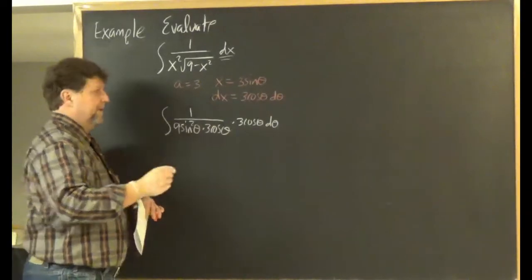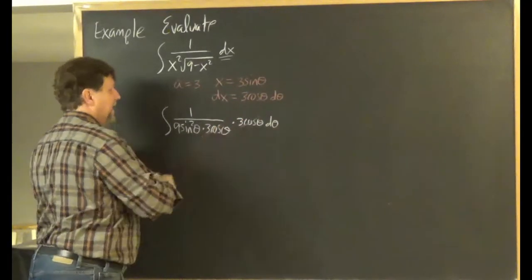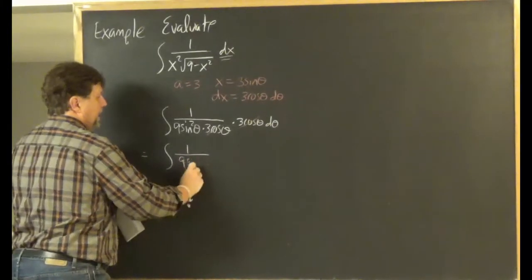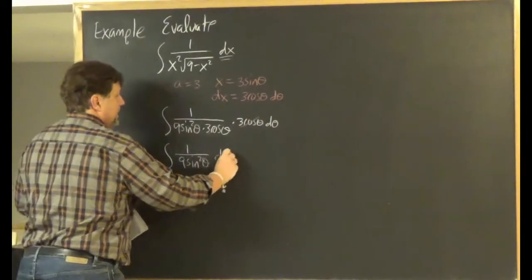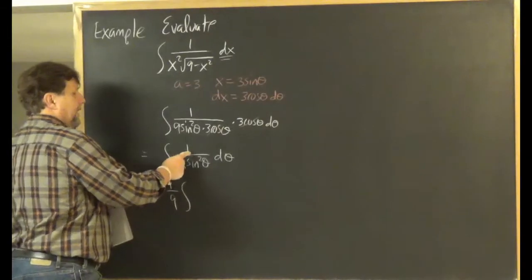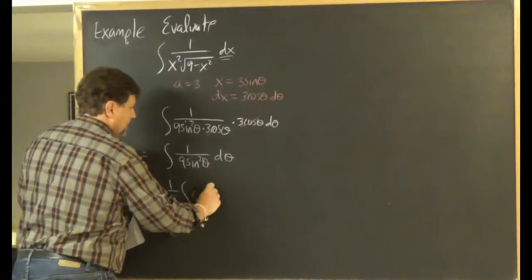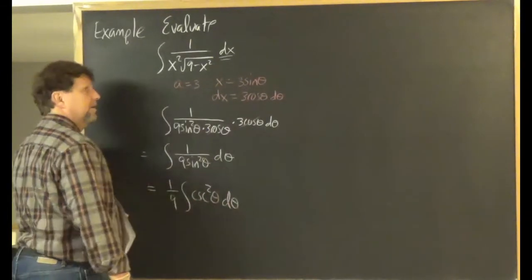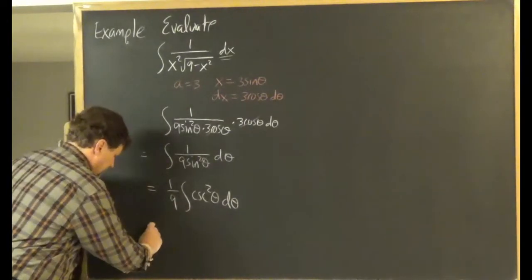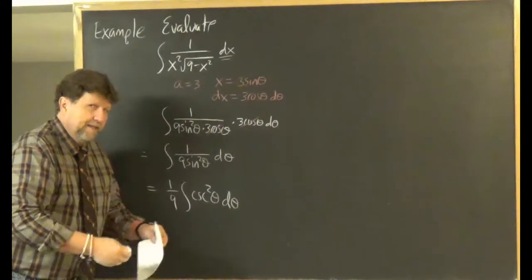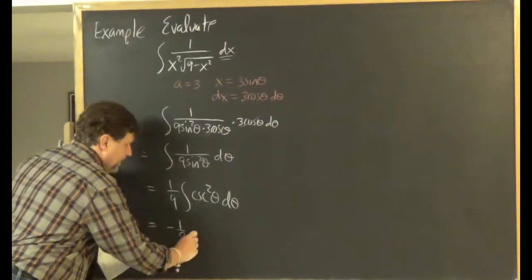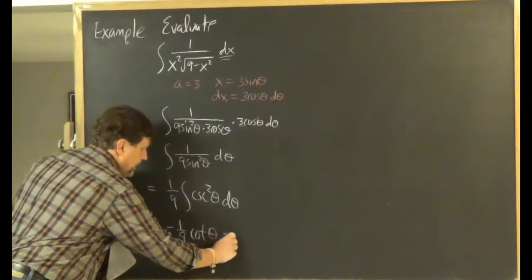We're left with the integral of 1/(9 sin²θ) dθ. Pulling out the 1/9, and noting that 1/sin²θ = csc²θ, we have (1/9)∫csc²θ dθ. The antiderivative of csc²θ is −cotθ, so we get −(1/9)cotθ + C.